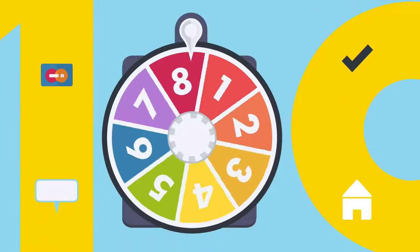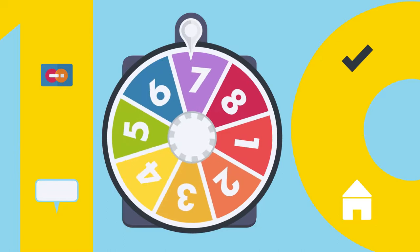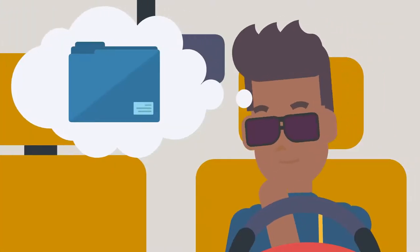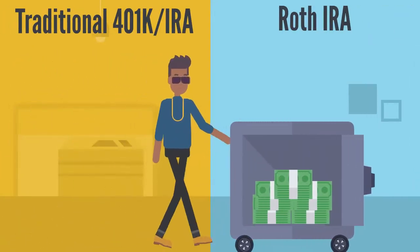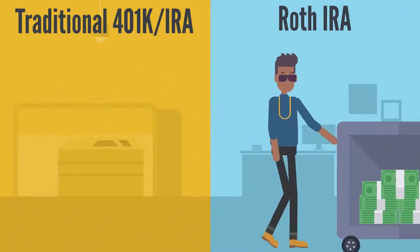Imagine your client spends a lucky number 7 and anticipates they may be in a higher tax bracket upon retirement. In this case, they may be interested in a Roth IRA conversion. A Roth IRA conversion involves someone moving money from a traditional IRA or 401k into a Roth IRA.